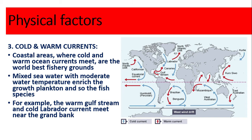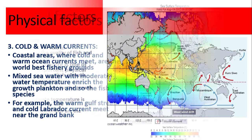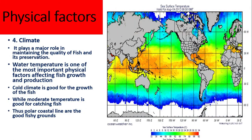For example, the warm Gulf Stream and the cold Labrador Current meet near the Grand Bank. The fourth factor is climate. Climate is a basic physical factor for maintaining the quality and quantity of fish. Cold climate is good for the growth of fish, while moderate temperature is good for catching fish. Thus, polar coastlines are good fishing grounds.